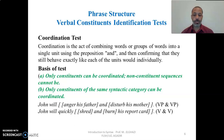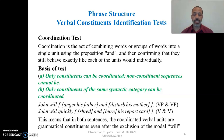Look at these examples: 'John will anger his father and disturb his mother.' Here 'anger his father' — the verb and its object — is coordinated with 'disturb his mother' — the verb and its object — and 'will' is excluded. This means 'will' is a constituent and 'anger his father' and 'disturb his mother' are two other constituents. Again, we can coordinate just the verbs alone: 'John will quickly shred and burn his report card.' This means that in both sentences the coordinated verbal units are grammatically constituents even after the exclusion of the modal 'will.'